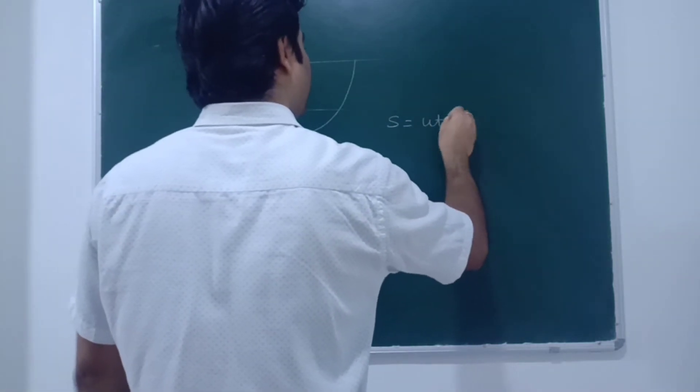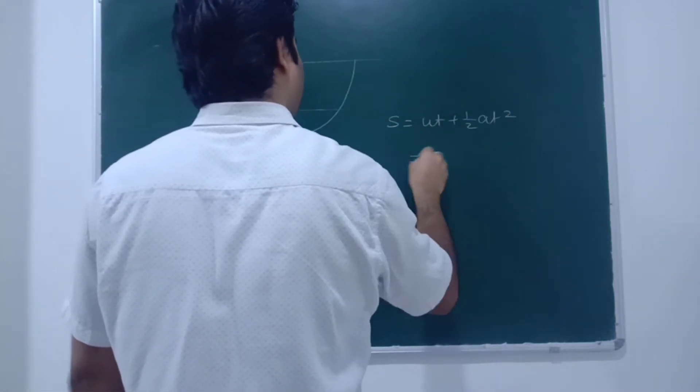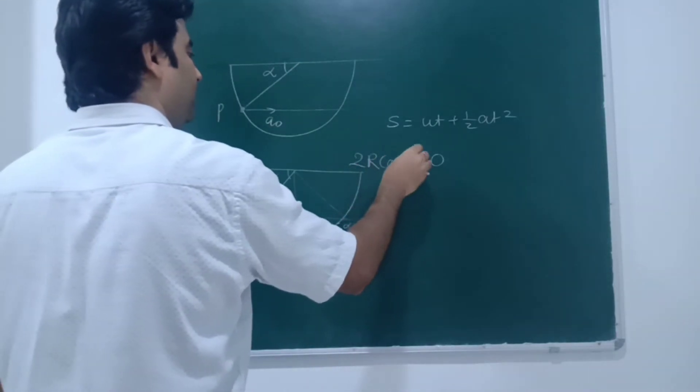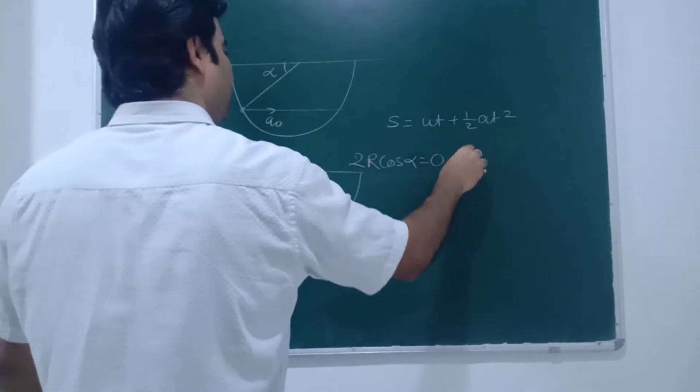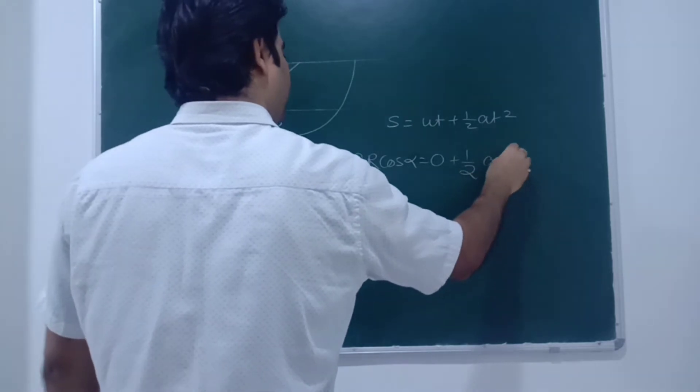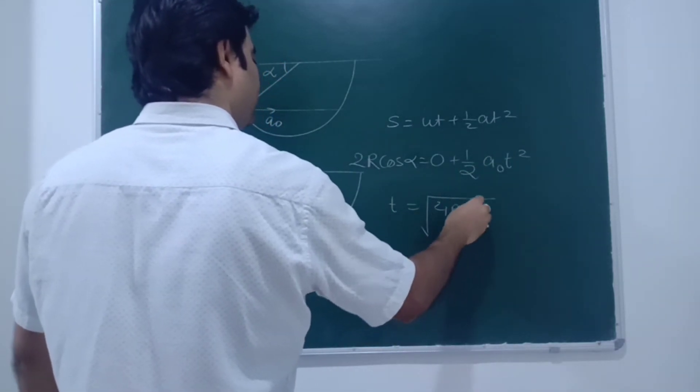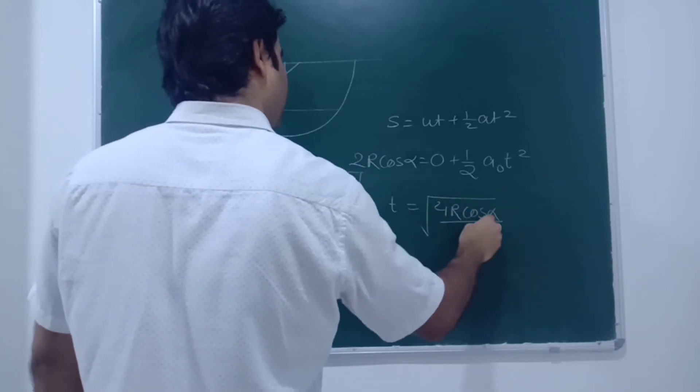So we will write s equal to ut plus half at square. Initial speed is zero. Displacement will be 2r cos alpha equals half a0 t square. So t will be root over 4r cos alpha upon a0.